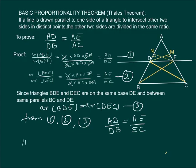Basic proportionality theorem, that is, a line drawn parallel to one side of a triangle intersecting the other two sides in distinct points, then the two sides are divided in the same ratio.